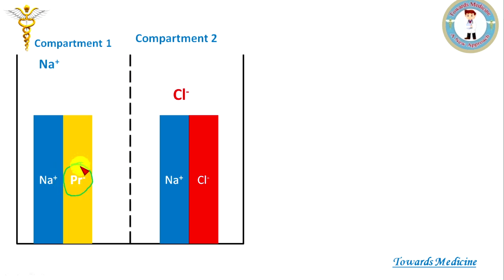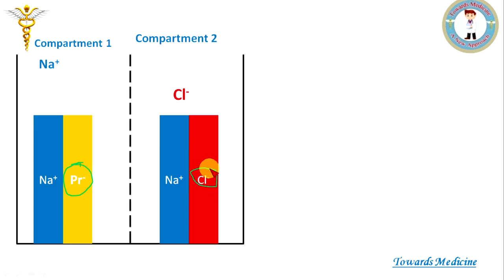The protein present in compartment 1 cannot move from compartment 1 to compartment 2, while in compartment 2 the negative ion is chlorine and it is a diffusible ion. So chlorine from compartment 2 will move to compartment 1 due to its high concentration.